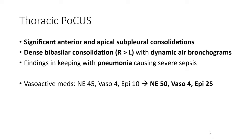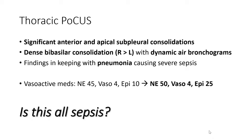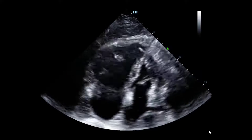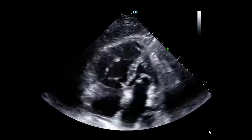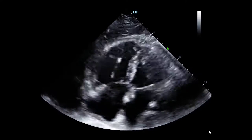The initial assessment was that the patient had significant anterior and apical subpleural consolidations, dense bibasilar consolidations more so on the right than the left, with dynamic air bronchograms — all findings in keeping with pneumonia causing severe sepsis. At the time of the scan, the patient's vasoactive medication needs had increased, including norepinephrine 50 and epinephrine 25. The question for us becomes: is this all sepsis, or is there something else causing hemodynamic decompensation? With this in mind, we turned to the cardiac scan.